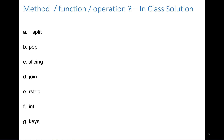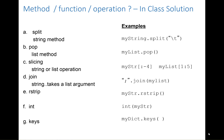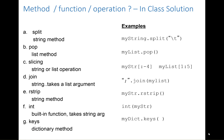It might be useful to look at some examples if you're stuck. These examples give it away in some cases because they use variables like myString, myList. Split is a string method. Pop is a list method. Slicing refers to an operation that can be done on strings and lists. Join is a string method that takes one argument, a list — the list must contain only strings. Rstrip is a string method that removes white space from the right side of the string. Int is a built-in function that can take a string with numerical digits. Keys is a dictionary method.